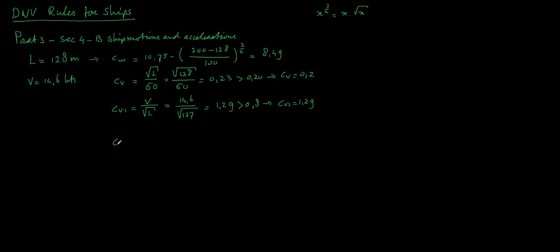Then we have the block coefficient, which is the displacement divided by rho times the length of the vessel, the width of the vessel (the beam), and the depth of the vessel.